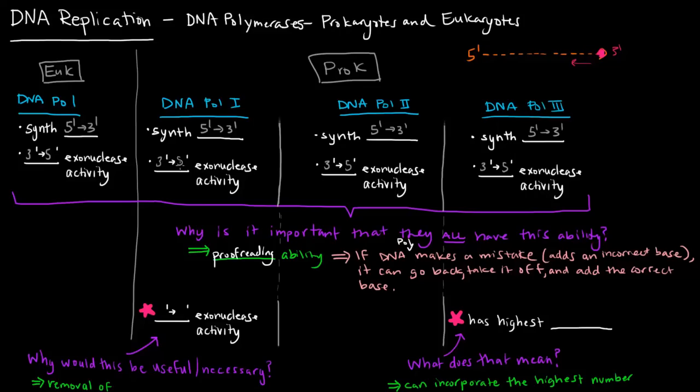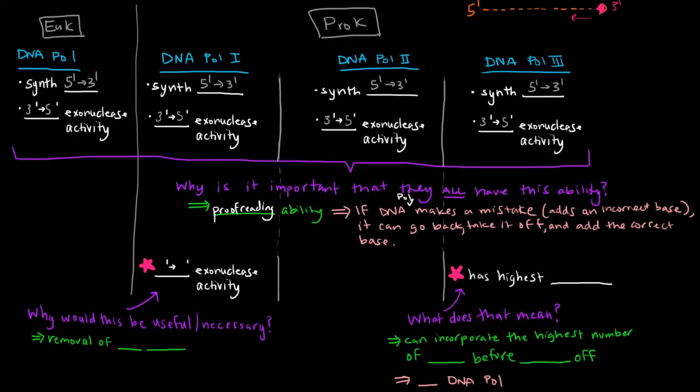Now they all have these traits in common. Now what makes some of these special? DNA polymerase 1 is special because it has 5' to 3' exonuclease activity.